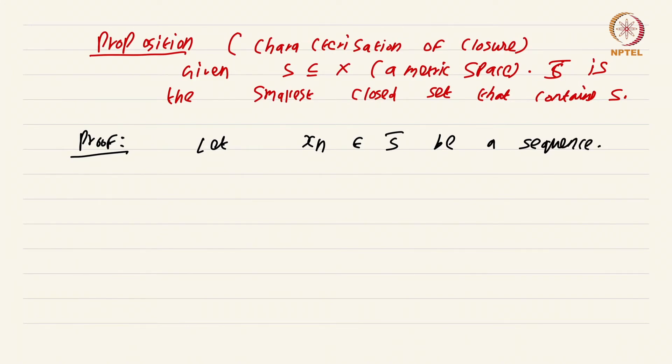Now since x_n are elements of S closure, we can find y_n in S such that d(x_n, y_n) is less than 1 by n.